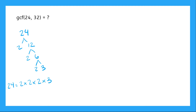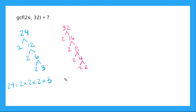Let's do the same thing now for 32. So we have 32 starts with 2 and 16. 16 gives us 2 and 8. 8 gives us 2 and 4. And 4 gives us 2 and 2. So I can also write 32 here is equal to 2 times 2 times 2 times 2 times 2.